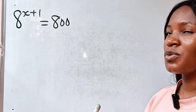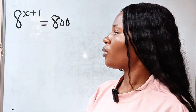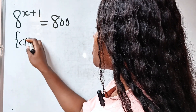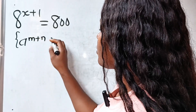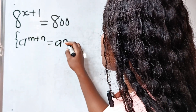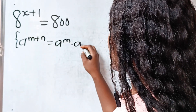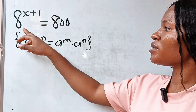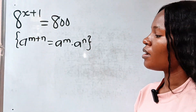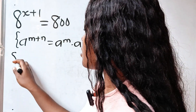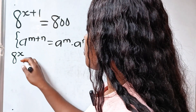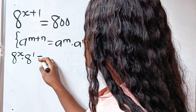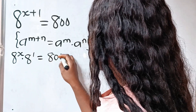First things first, let's remember this law of exponents that states that 8 to the power of m plus n is equal to 8 to the power of m multiplied by 8 to the power of n. We are going to express this in this form. So now we have 8 to the power of x multiplied by 8 to the power of 1 is equal to 800.